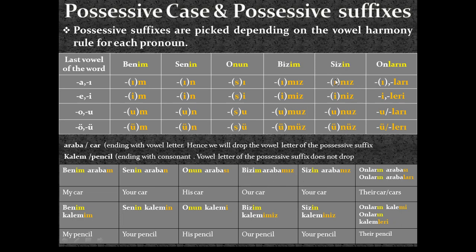For third person plural possessive adjectives, I have the option: either treat it like third person singular — 'araba' ends with vowel, so apply extra 's' buffer: 'onların arabası'. Or alternatively, since 'a'/'ı' as last vowel requires 'ları': 'onların arabaları'. Both forms are correct.